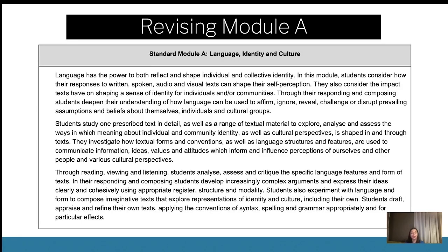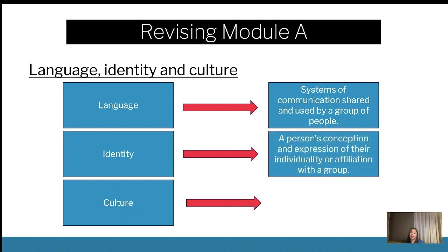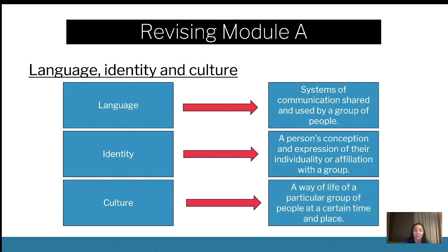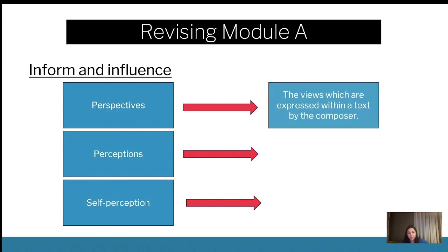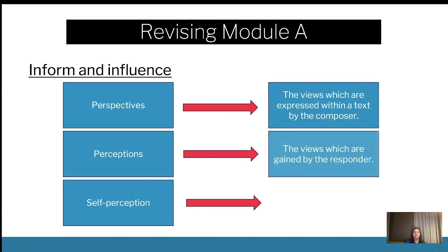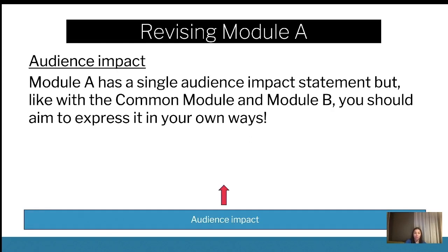Let's talk about Module A — language, identity, and culture. Language is a system of communication. Identity is how we express ourselves and our individuality. Culture is a way of life in a particular group of people at a certain time and place — how they live out their beliefs and values. Perspectives is literally how we see the world. Perceptions are the views gained by the responder, and self-perception is how we view and understand ourselves. Those are just some of the key words.